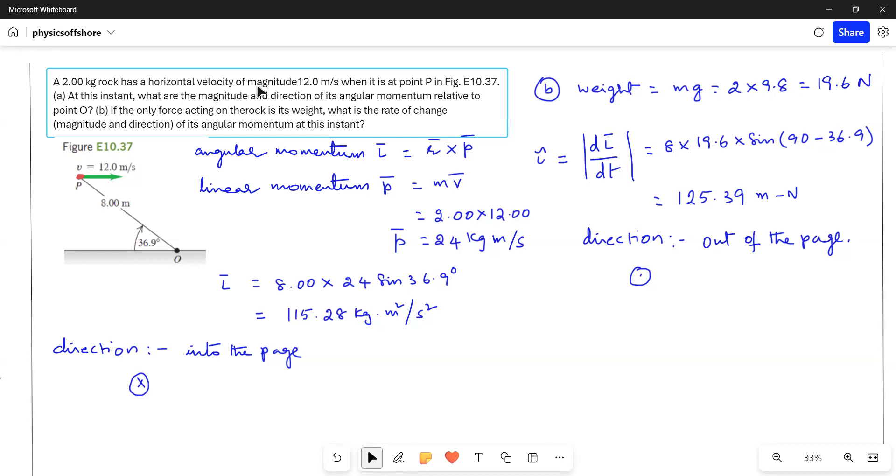A 2 kg rock has a horizontal velocity of magnitude 12 m/s when it is at point P shown in the figure. At this instant, what are the magnitude and direction of its angular momentum relative to point B? If the only force acting on the rock is its weight, what is the rate of change of its angular momentum at this instant?